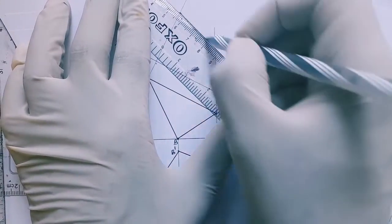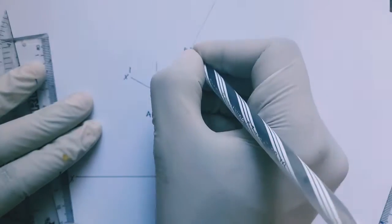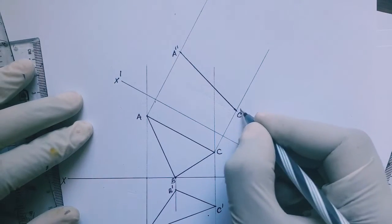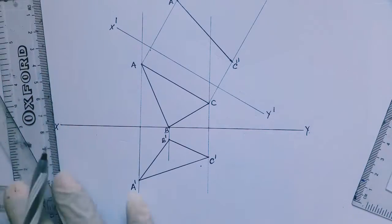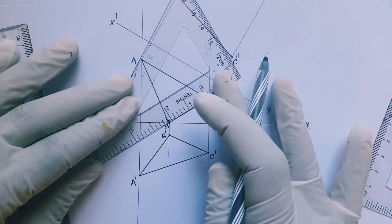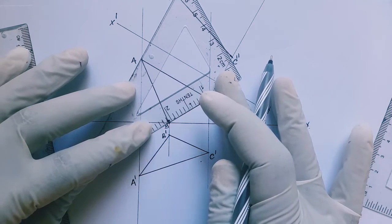This is the true length of AC. We can call it A double prime C double prime. Next, let's locate the true length for BC. Again, let's draw a parallel line to BC.